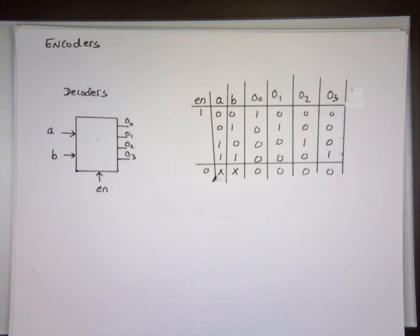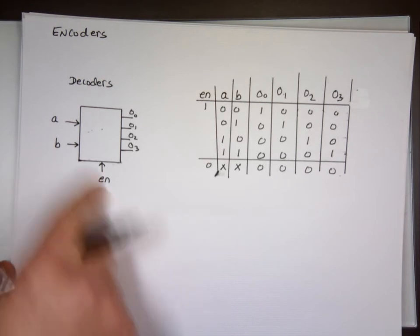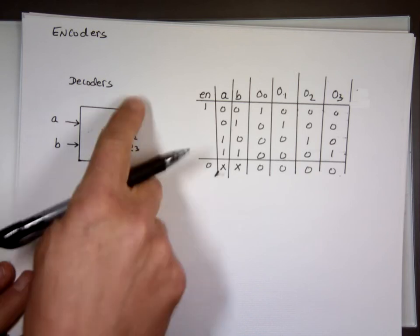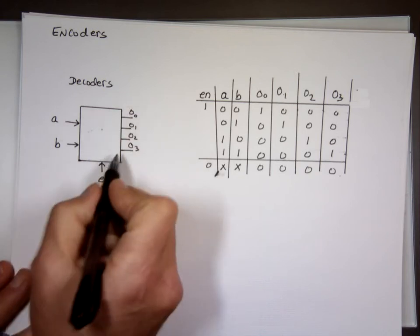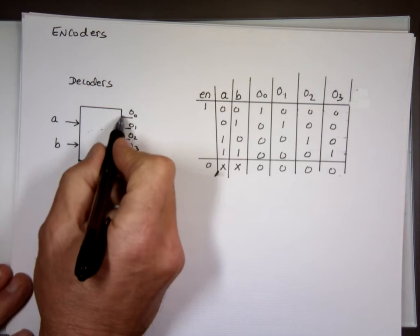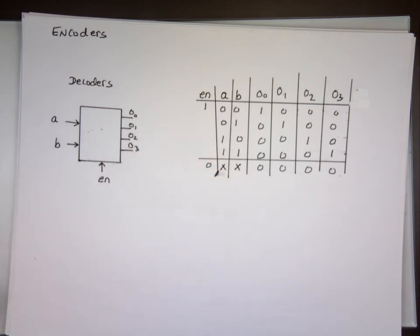That's the way this chip works — that's how this decoder operates. If you want it to work, make sure the enable is high. If you make it 0, it's off and nothing happens. The fact that I don't have bubbles here means only one of the outputs will be high at any time.